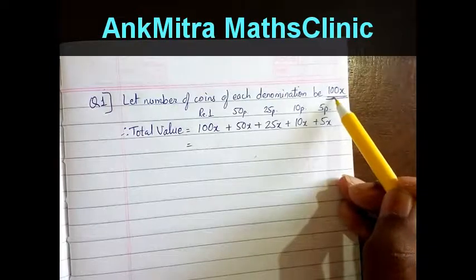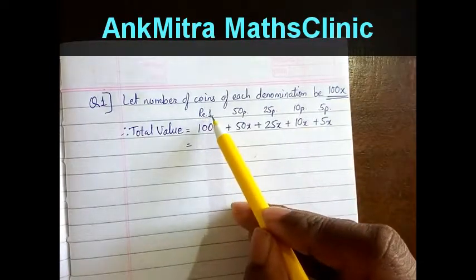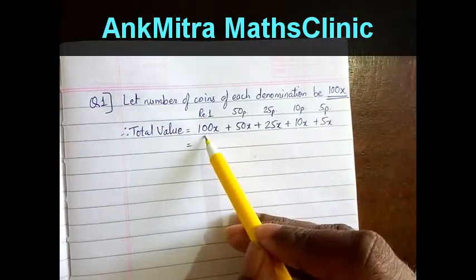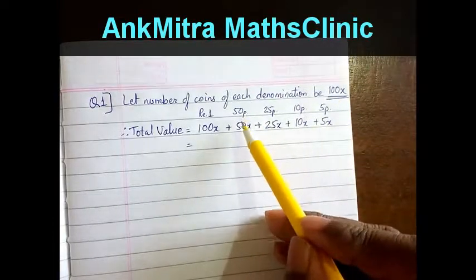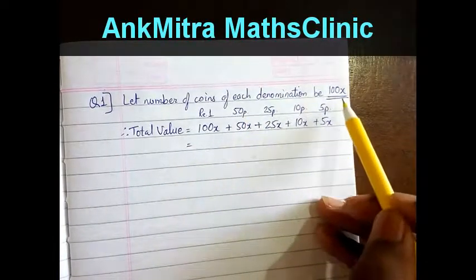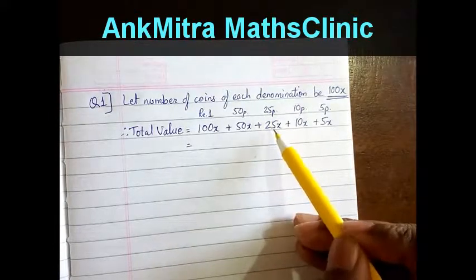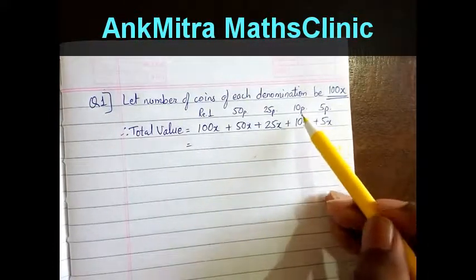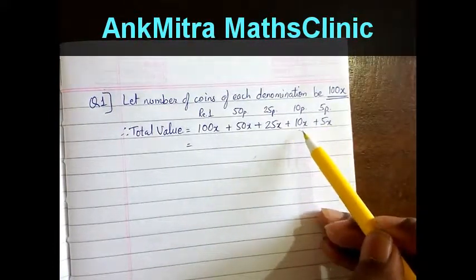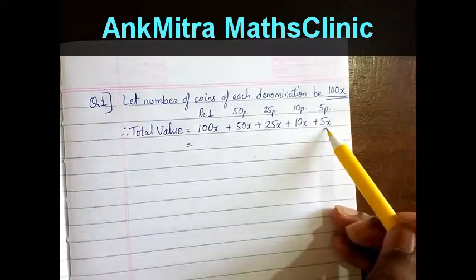So with 100x coins of 1 rupee we will have the value as 100x, 100x coins of 50 paise will have the value as rupees 50x, and similarly for 25 paise coins the value will be 25x, 10 paise coins the value will be 10x, and 5 paise coins the value will be 5x.